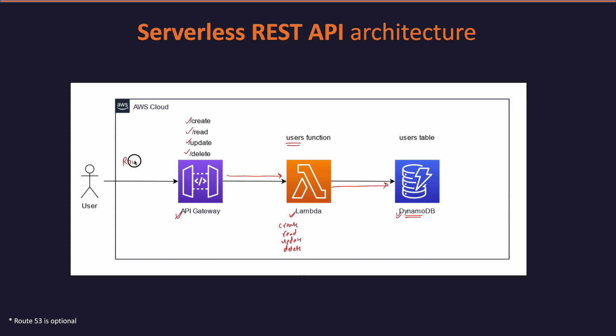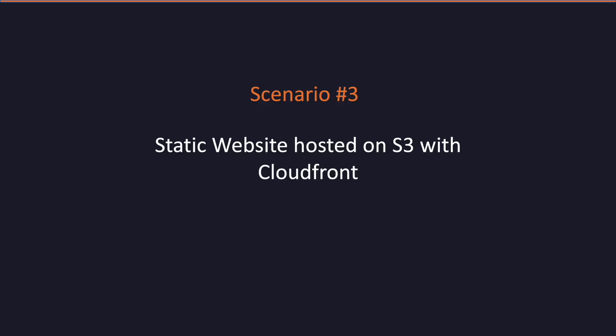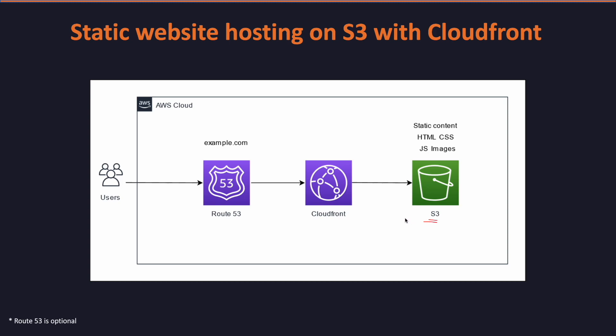If you want to make this more advanced, we can also set up Route 53 between the user and the API Gateway. Scenario number 3 would be deploying a static website on S3 with CloudFront and Route 53.